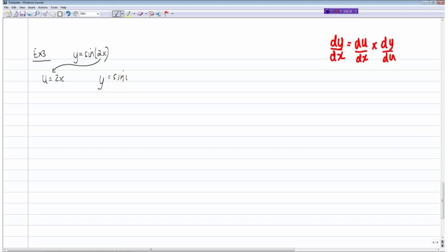We would therefore say du/dx is equal to 2 and dy/du is equal to cos u. So therefore dy/dx would be equal to 2 cos u and since we know what u is, 2x, we can say 2 cos 2x. And that's the differential of y equals sine 2x.